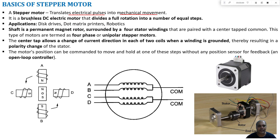It is made up of a brushless DC electric motor which divides the full rotation — 360 degrees — into a number of equal steps. Each step is uniform, and together they complete the full 360-degree rotation. Applications where stepper motors are used include disk drives, dot matrix printers, and robotics.